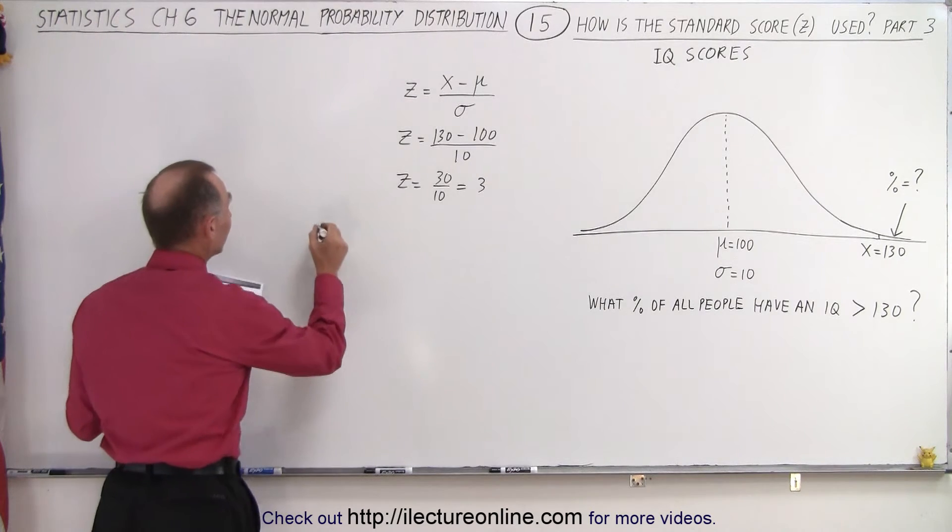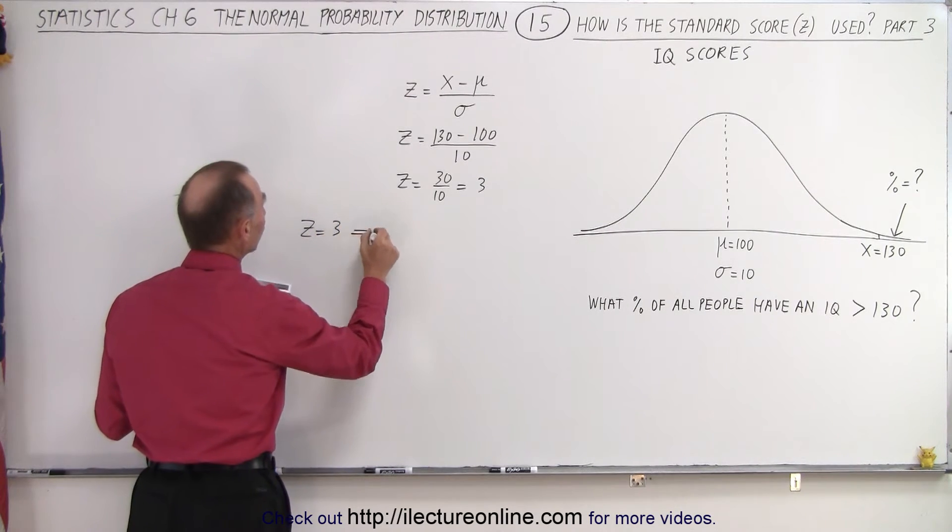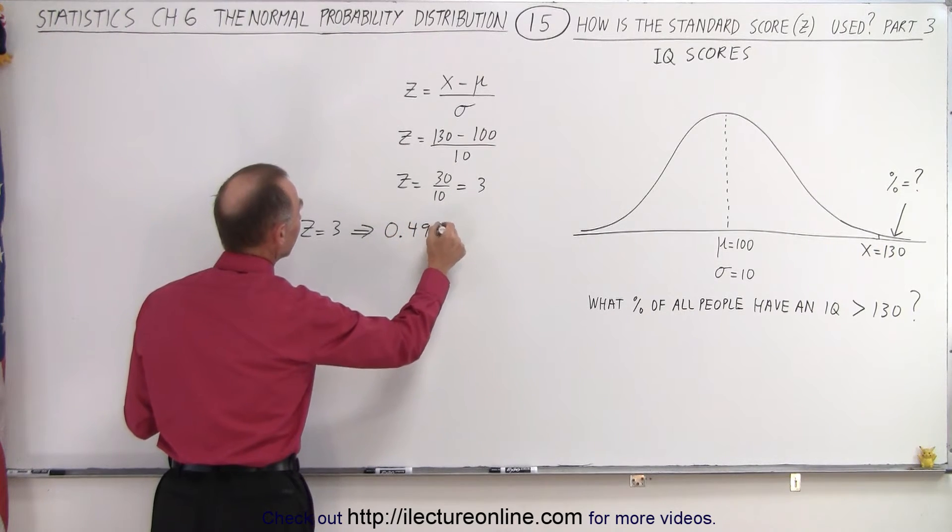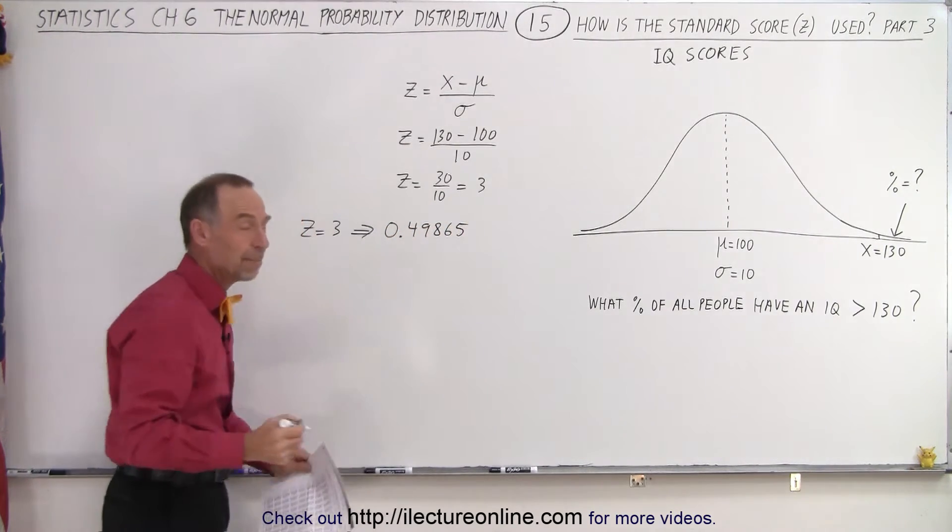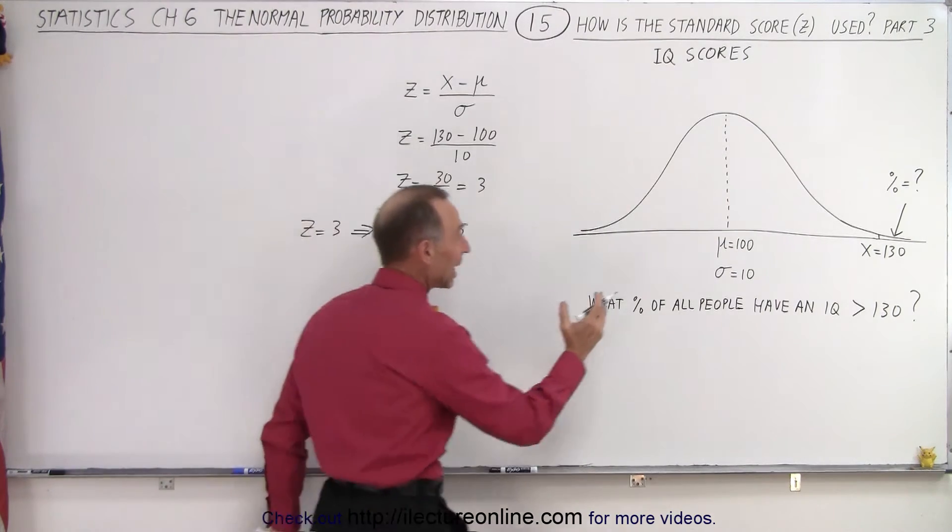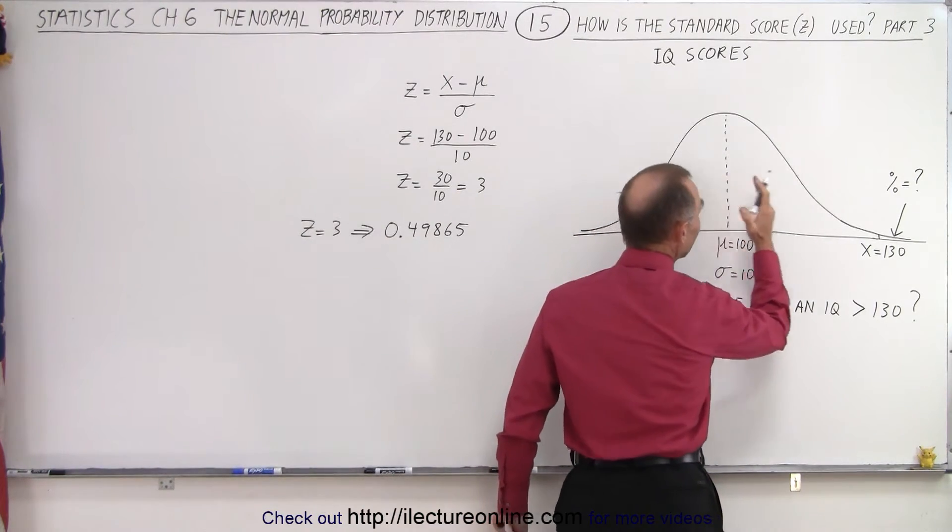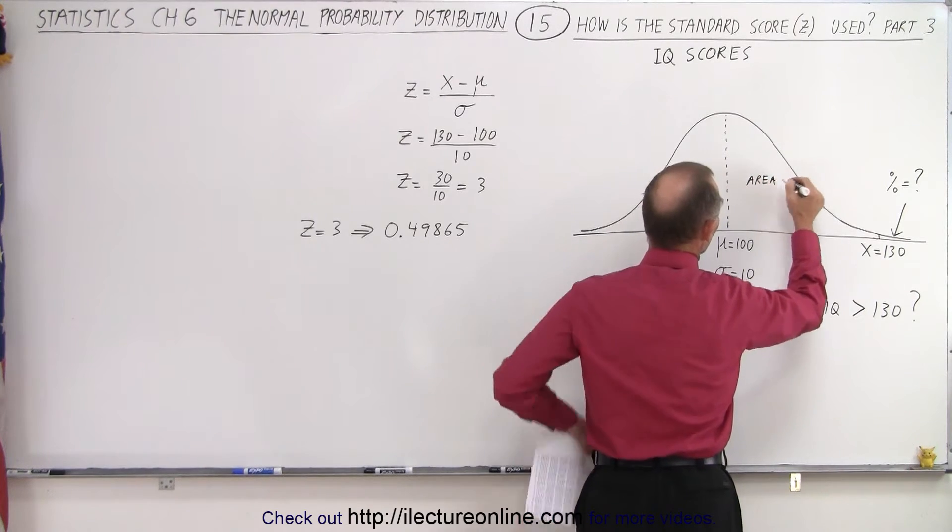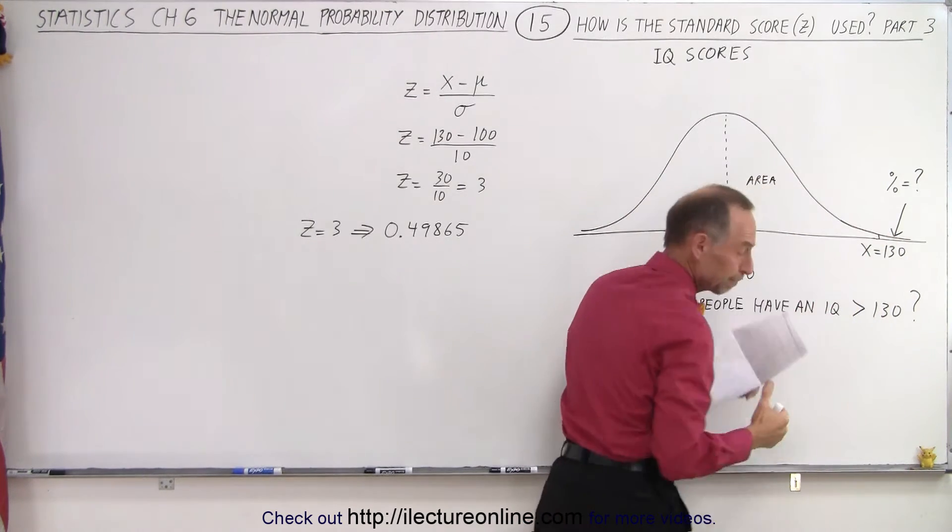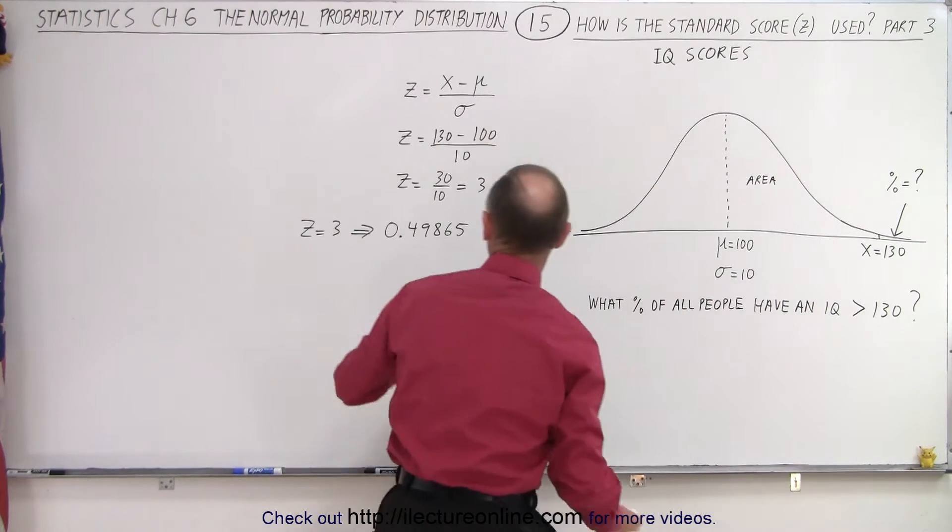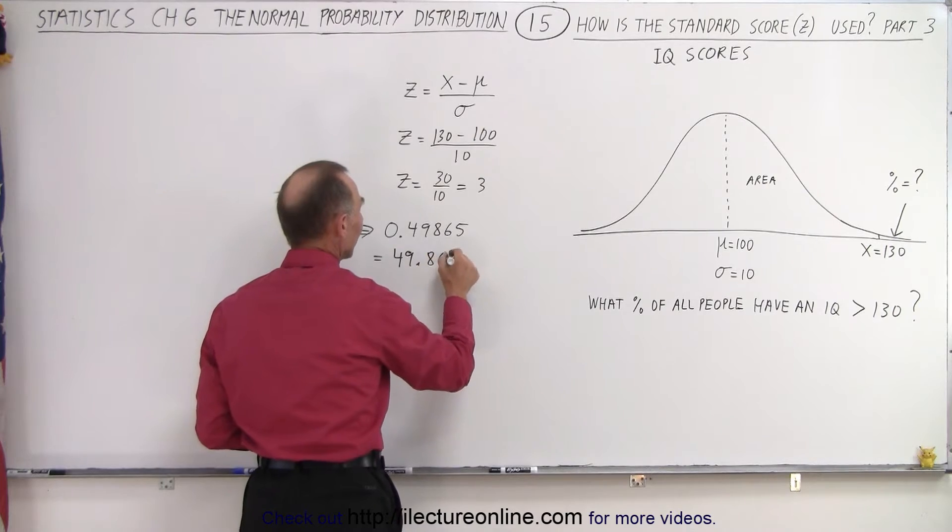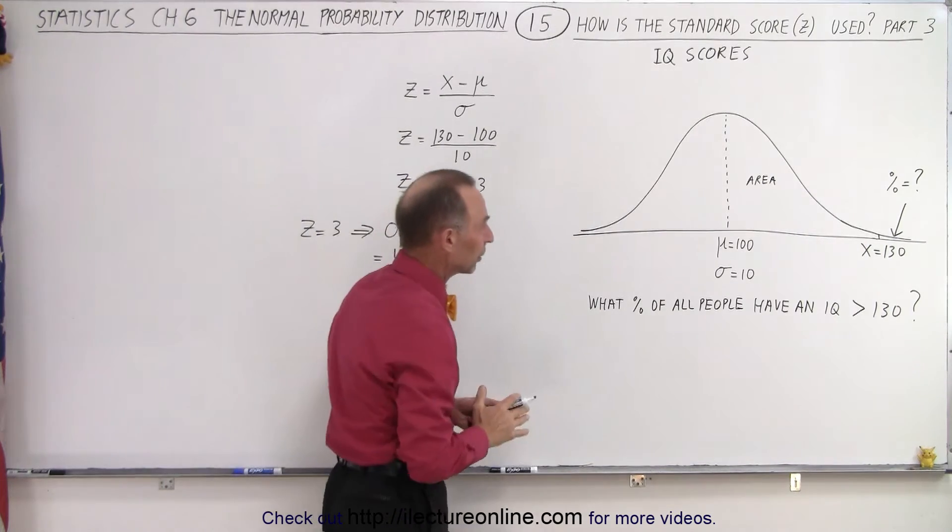So z equals 3 corresponds to 0.49865. What does that mean? Well, that means the area between the mean and that point right here, this area between those two points represents 49.865% of the total area.